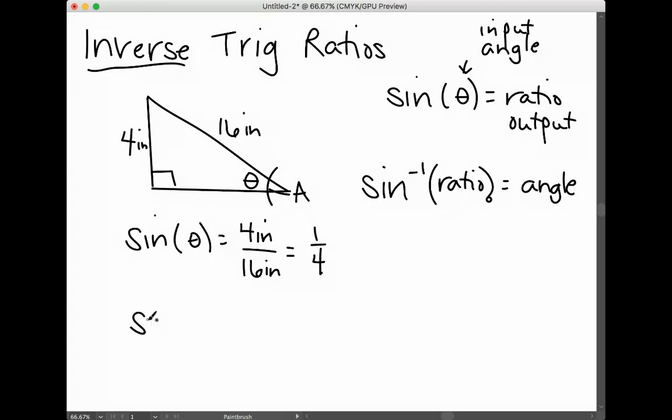So what we do is go to our calculator, because that's where it has stored all of the angles and their ratios. You can work backwards and give the calculator a ratio, and it will give you an angle.